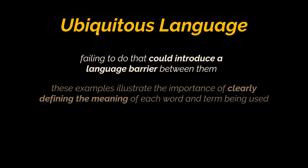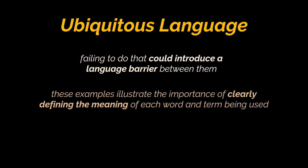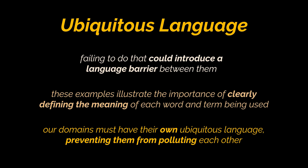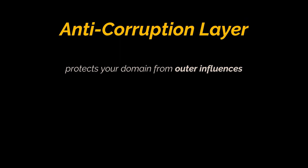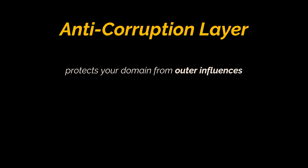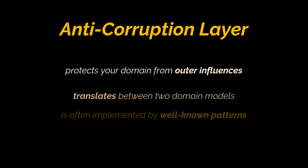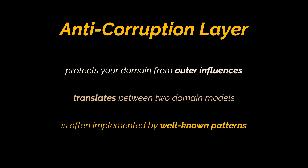These simple examples illustrate the importance of clearly defining the meaning of each word and term being used. This is especially important where many departments and business units are collaborating on large-scale projects. Note that each domain has to have its own ubiquitous language — this creates a boundary between different domains and prevents them from polluting each other. If you want to protect your domain from outer influences, you can create what we call an anti-corruption layer. This layer translates between two domain models; it can be uni- or bi-directional and is often implemented by well-known patterns like the adapter, facade, or translator.